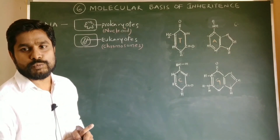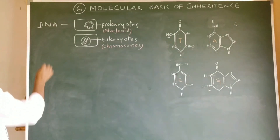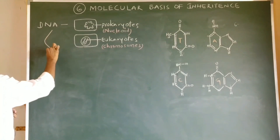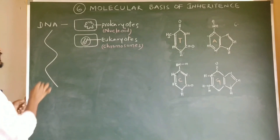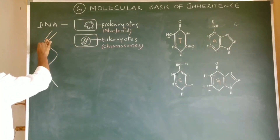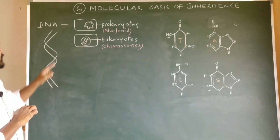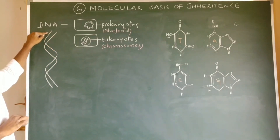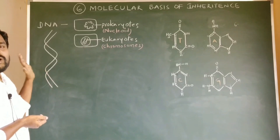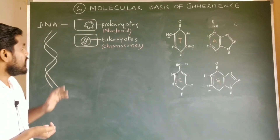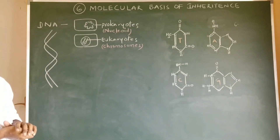In eukaryotes, DNA is present in the form of highly condensed chromosomes. The uncondensed form of DNA is a double helical structure. DNA consists of two strands, each strand helically coiled around the other to form a double helical structure, which appears like a twisted ladder or spiral staircase.